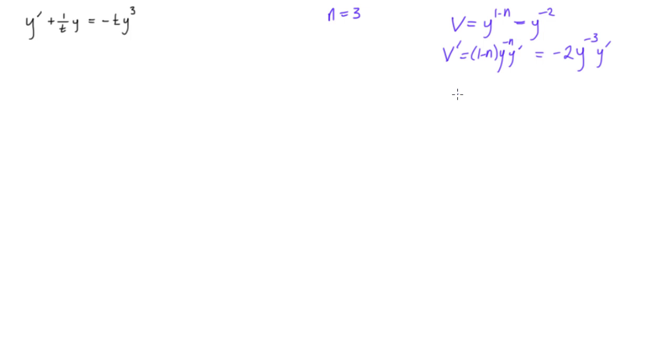Okay, so again, isolate y prime. We can write y prime as minus v prime, this was over 2, times y cubed. Just rearranging that equation. And notice again, we have 1 minus n. Just for your reference, 1 minus n is equal to minus 2. This stuff is going to appear throughout the problem.